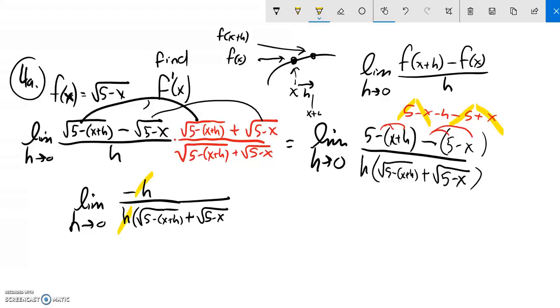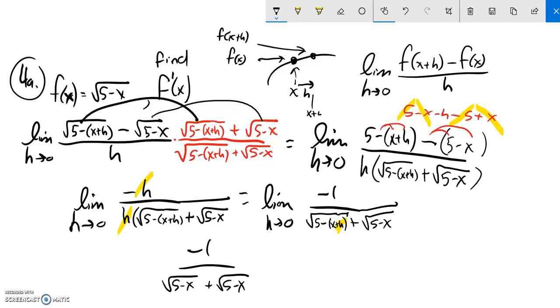And negative h divided by h is negative 1. So that's going to leave me my limit as h goes to 0 of negative 1 over this mess, square root of 5 minus x plus h plus square root of 5 minus x. And now that h canceled, so now I can do some direct substitution. As h goes to 0, that just goes to 0. So that right there becomes a 0.